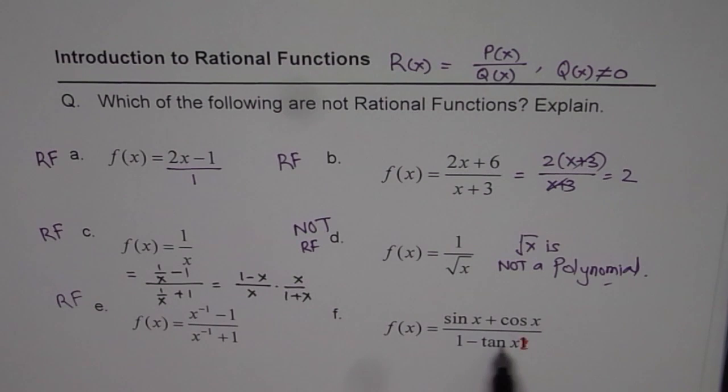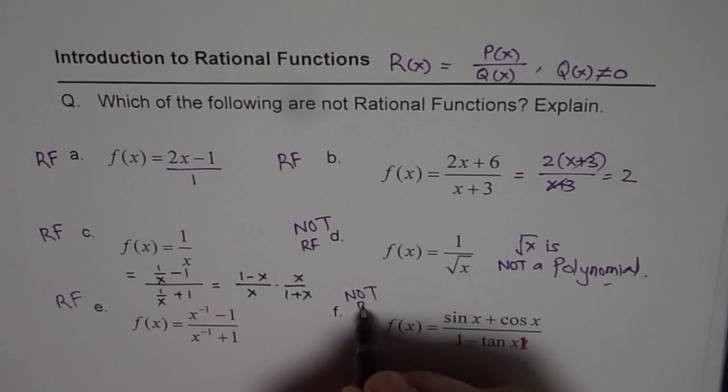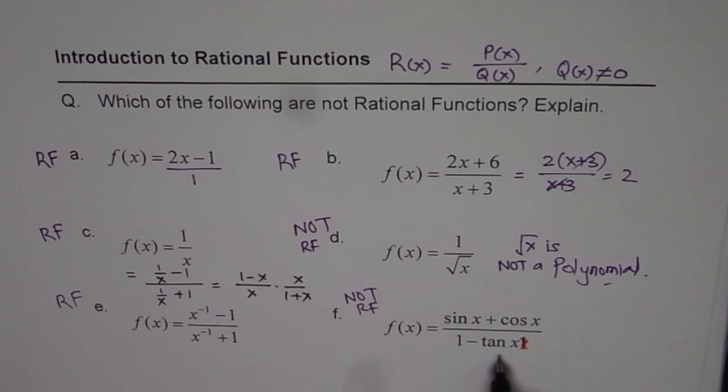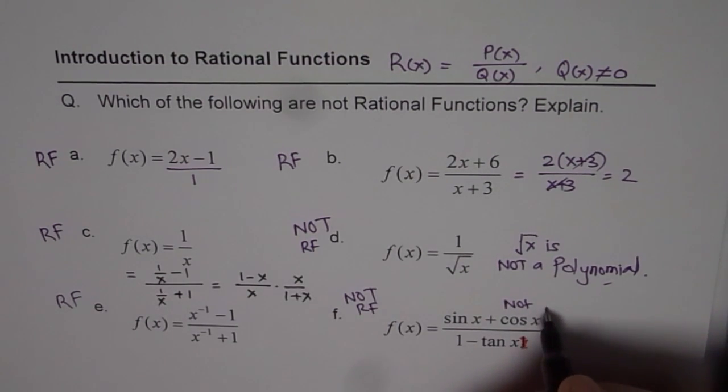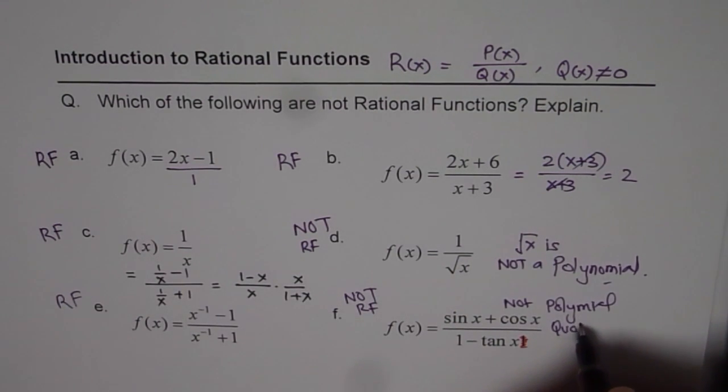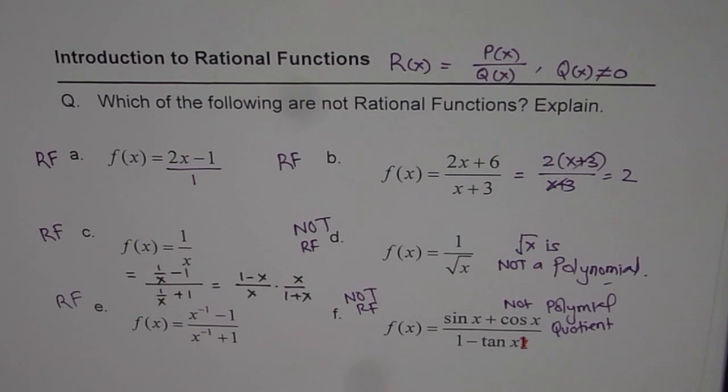f: sin x plus cos x over 1 minus tan x. Well, this is not a rational function. And reason is sin x, cosine x are not polynomials. So here, not polynomial quotient. Both are not polynomials. So that is how you have to look into rational functions and understand that when you are given something over something, necessarily, it is not going to be a rational function. You have to see that they should be polynomials. That is very important to understand.